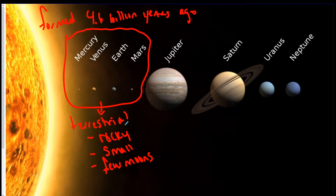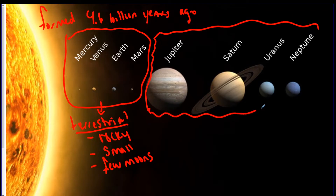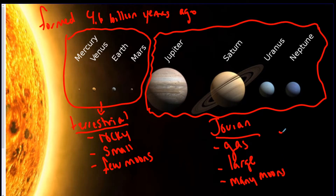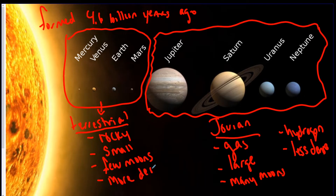So those are the three characteristics of terrestrial planets: Mercury, Venus, Earth, and Mars. Then you have the four gas giants, called the Jovian planets. Their characteristics are the opposite — they are gas, they are large, and they have many moons. They're mostly made of hydrogen, they are less dense because they're made of gas, and the terrestrial planets are more dense because they're made of rock.